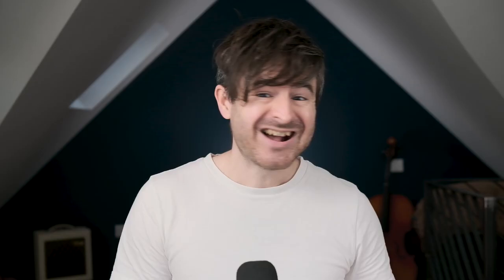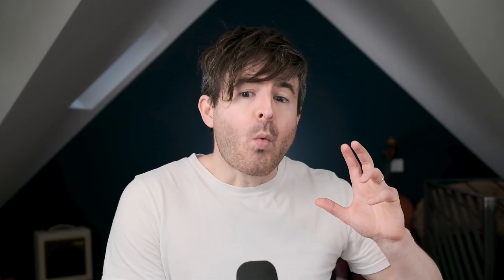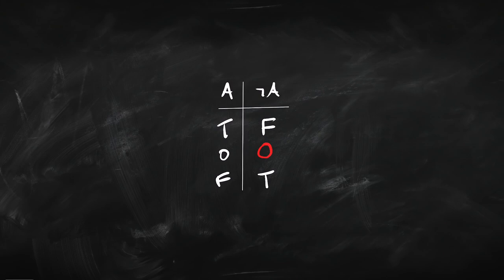Later on, we're going to think about what this value should mean and how we should understand it philosophically — interpreting it as either 'neither true nor false' or 'both true and false.' What we're going to do now is give an account of the connectives — not, and, or, if-then — in terms of these three truth values. We're basically back to truth tables, truth-functional logic, looking at truth values of A and B to work out the values of A-and-B, A-or-B, if-A-then-B, and not-A. We're going to use truth matrices to do this.